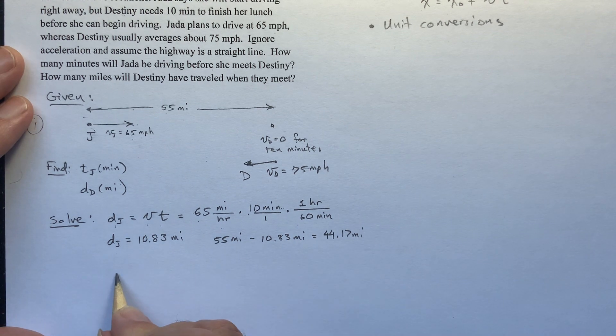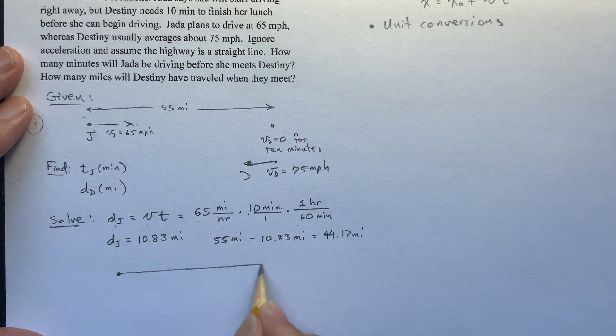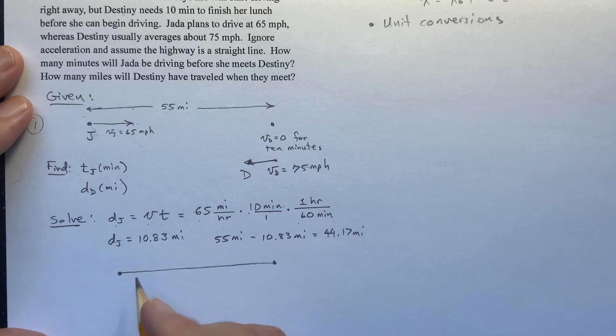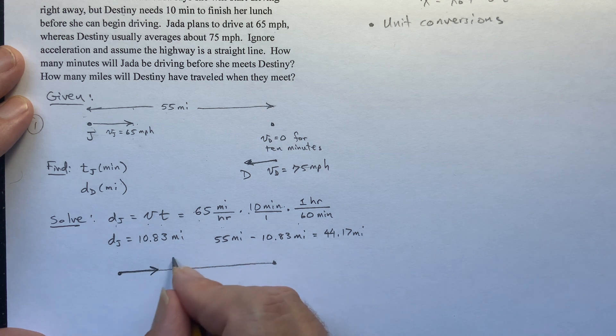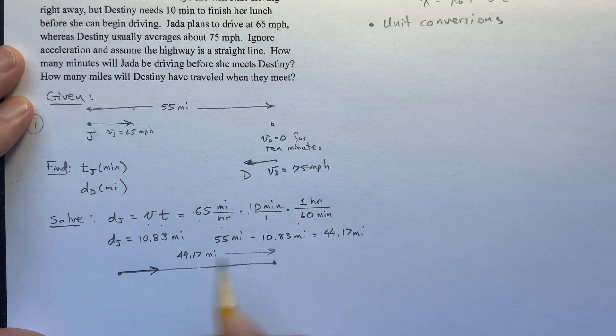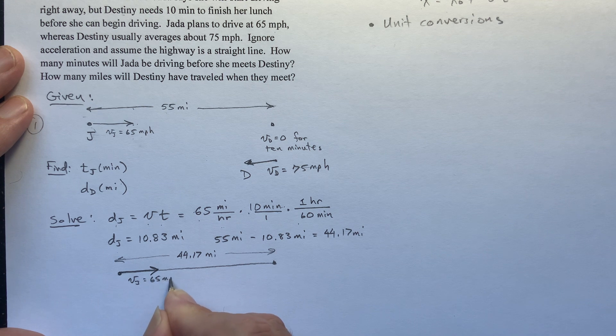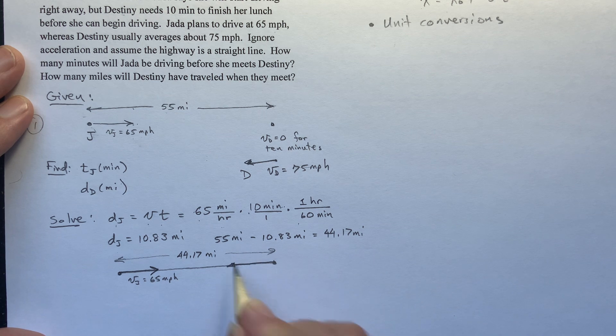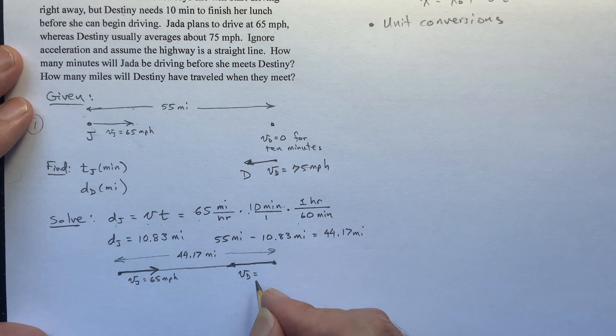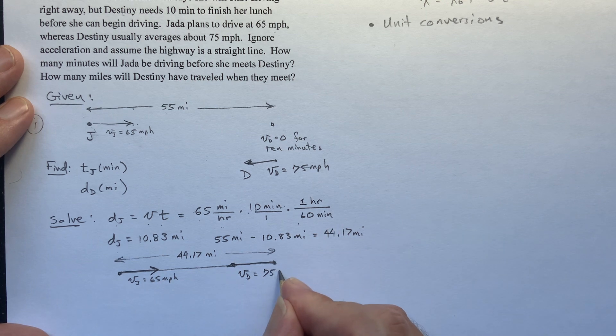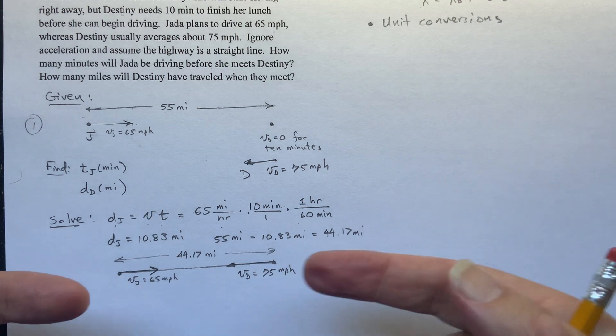So, well, they were 55 miles apart. And then I'm going to subtract the 10.83 miles that Jada drove while Destiny was finishing lunch. And so they are now, if you do the math, they're 44.17 miles apart. So now I'm going to redraw it here. We've got a different situation. Here's the distance apart they are. And that distance is 44.17 miles. And the velocity of Jada is still 65 miles per hour. I probably should have converted it into miles per minute. But that's okay. And then this is the velocity of Destiny now is 75 miles per hour. And they're going towards each other now.